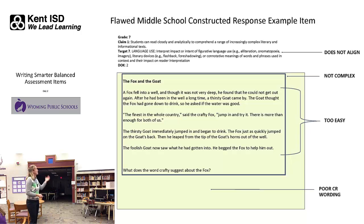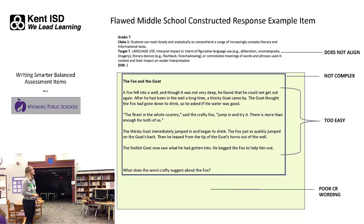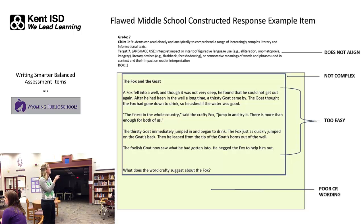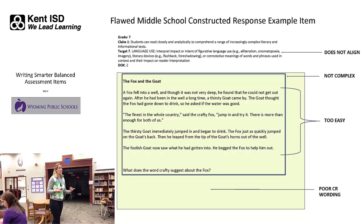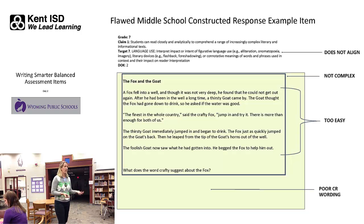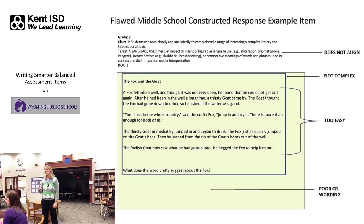We have an example up here — it's tiny to read, but I'll go through why they consider this a flawed example. The easiest ones to showcase this on is an ELA example. A couple of things highlighted here: the claim and target piece didn't align. But probably the biggest issue was that the text the kids were reading — if you can see that little tiny '7' up there, this is a grade seven assessment — but the text is actually about a fourth-grade reading level. And then the question, 'What does the word crafty suggest about the fox?' is too open-ended, and it doesn't indicate to students that they should use examples from the text to prove what the question is asking.